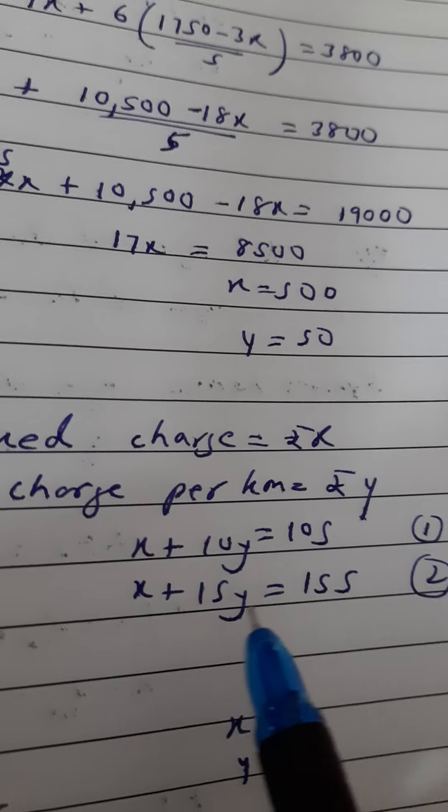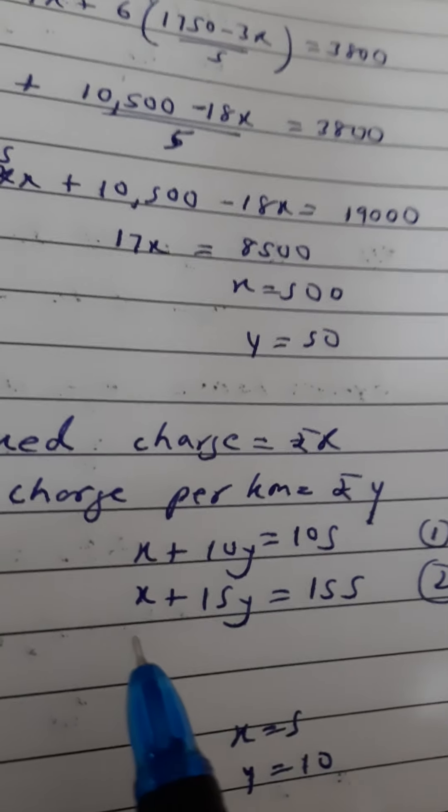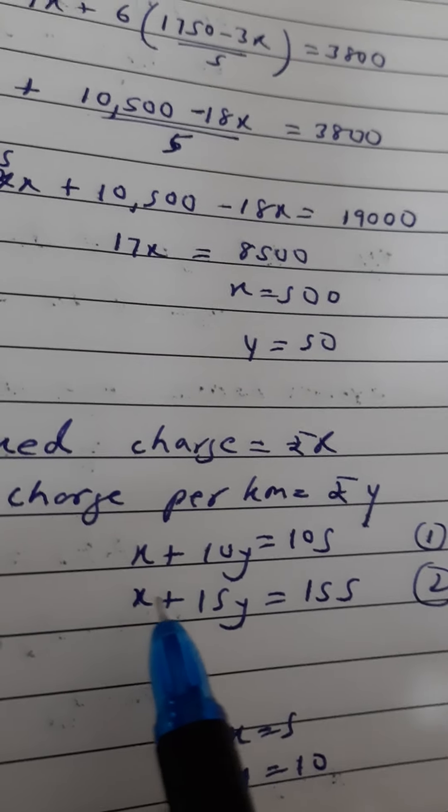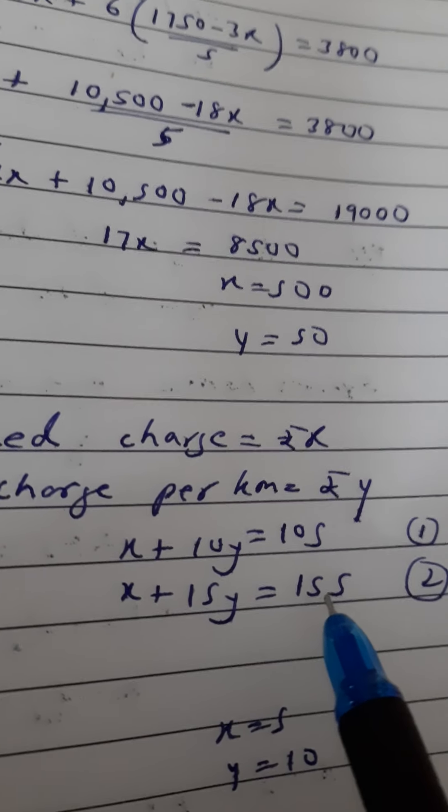Then he is traveling 15 kilometers and has to pay 155. So your equation: x, the fixed charge, plus the charge for 15 kilometers, 15y, equals 155.